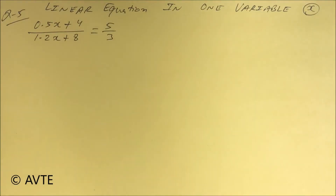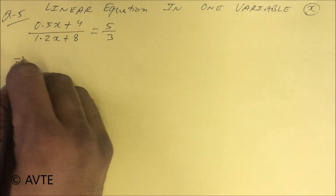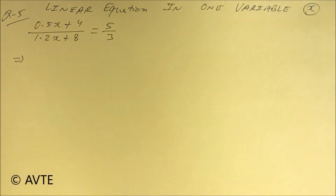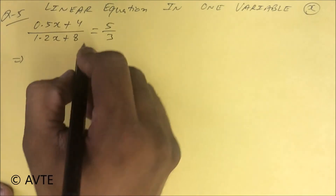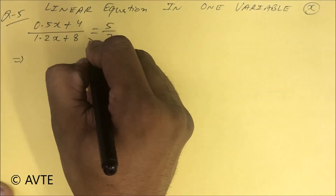Hello friends, now we are doing question number five in the series — linear equation in one variable — how to solve for x. This is a simple question with a numerator and denominator on the left side and numerator and denominator on the right side. On the left side we have a variable and on the right side we have numbers. This is a decimal question, so just cross multiply.